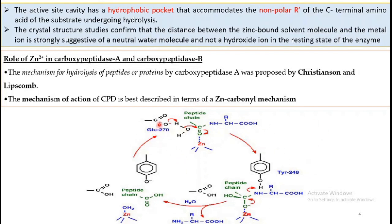We have to highlight that glutamate 270 and tyrosine 248 are not coordinated to the metal atom, but they are present in the hydrophobic pocket and are very much useful and needed for the hydrolysis of proteins by carboxypeptidase.